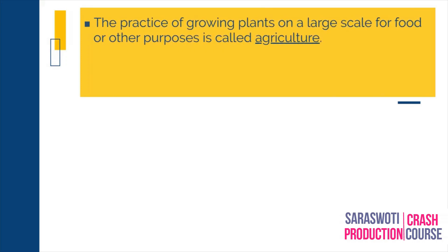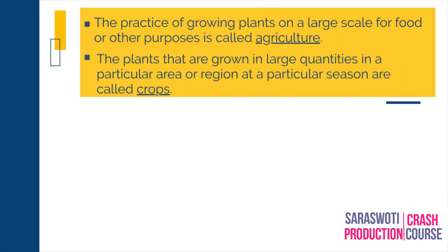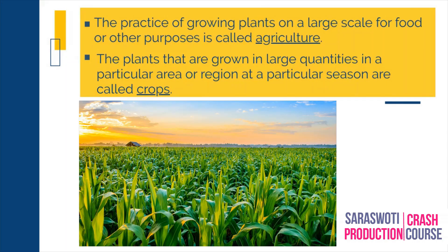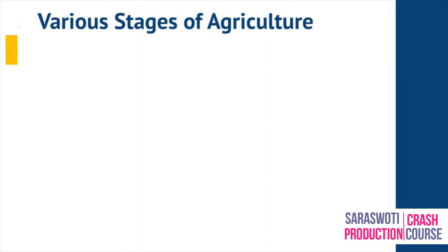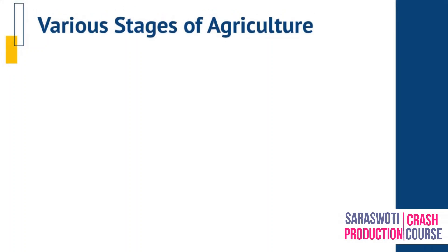The practice of growing plants on a large scale for food or other purposes is called agriculture. The plants that are grown in large quantities in a particular area during a particular season are called crops. Let us read about the various stages of agriculture.